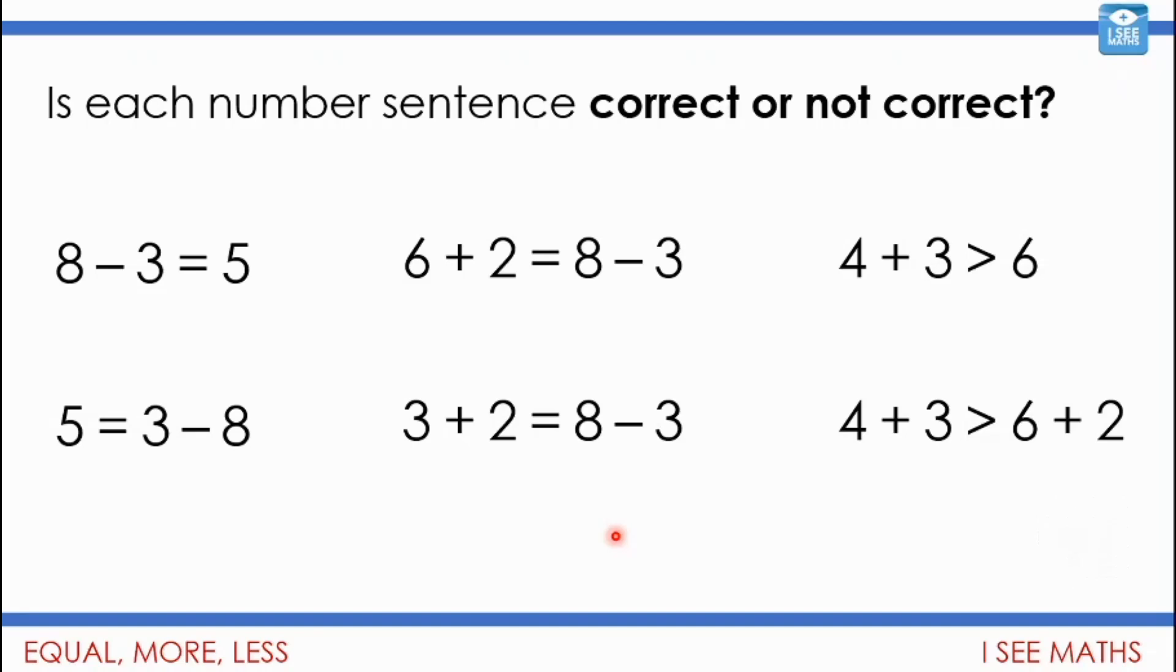So 8 subtract 3 equals 5? Yes, 8 subtract 3 is 5 and this is a 5, so 5 and 5, they are the same. But 5 equals 3 subtract 8, is that true? Is 5 the same as 3 subtract 8? Well no actually. 3 subtract 8 is actually negative 5, so they're not the same. And again you might not have come across negative numbers yet, but we just know that 3 subtract 8, that actually isn't the same as 5.